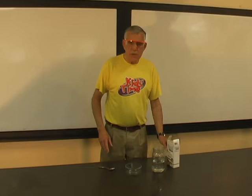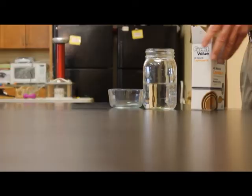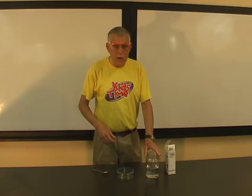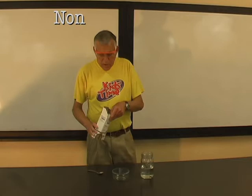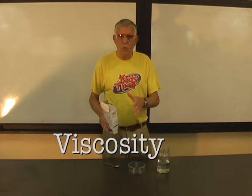Most things have what we call viscosity. Honey is very viscous and it hardly wants to pour out of containers. But water pours out very readily. If we can make a non-Newtonian fluid or liquid, it acts like a solid sometimes and sometimes it acts like a liquid. So the viscosity changes — that's what makes it non-Newtonian.